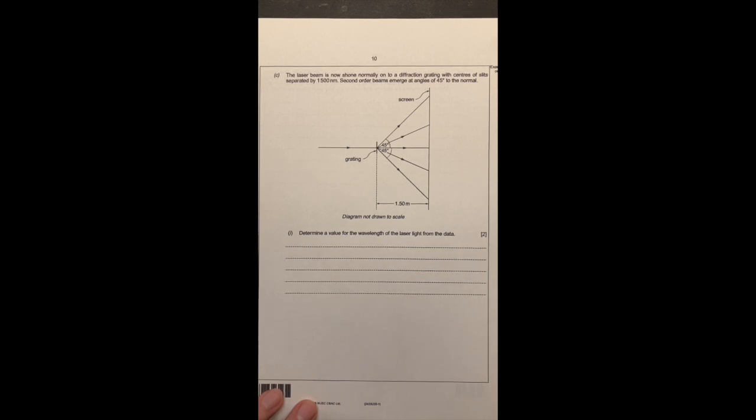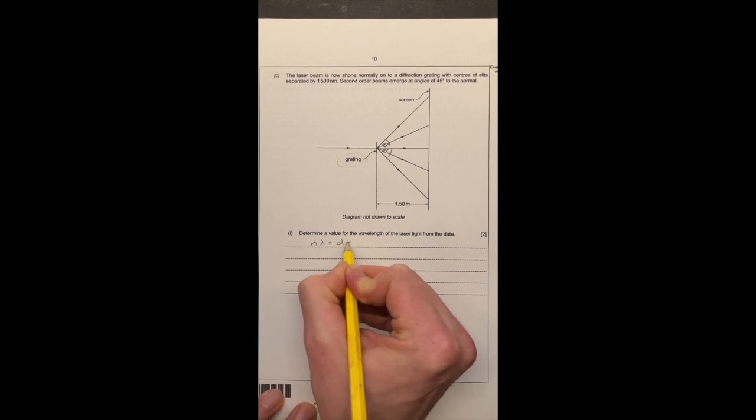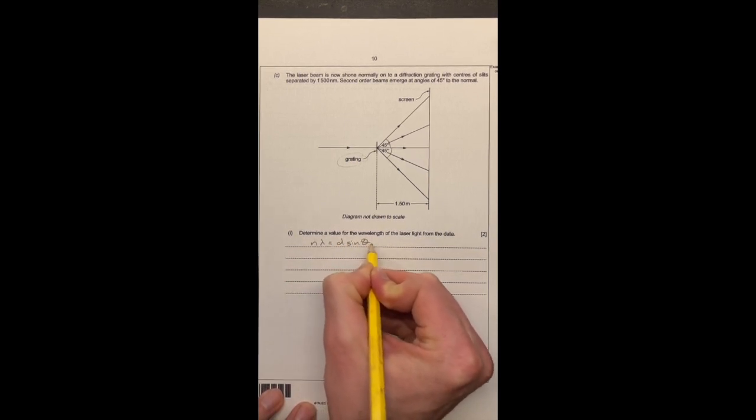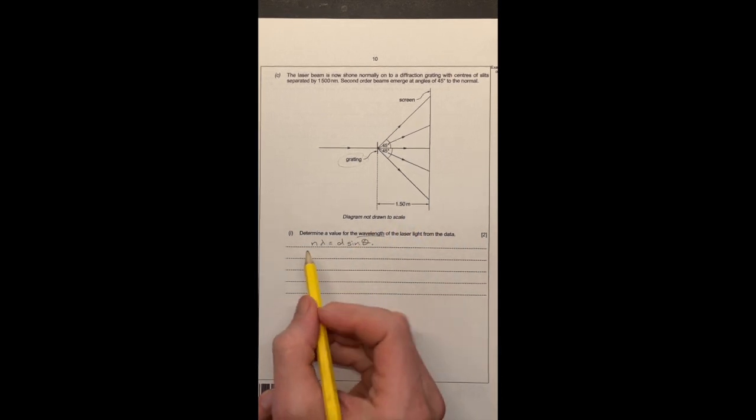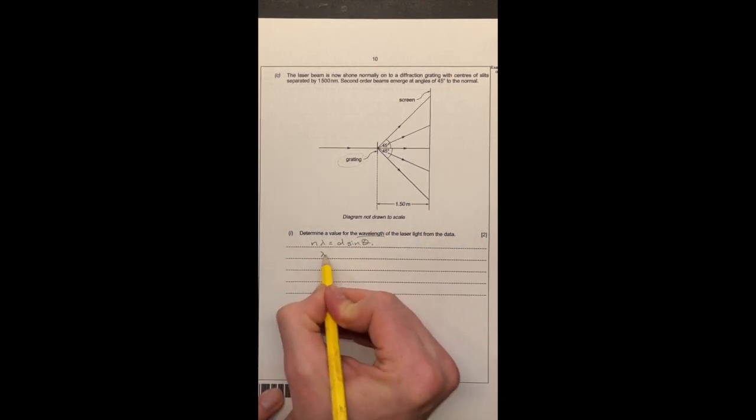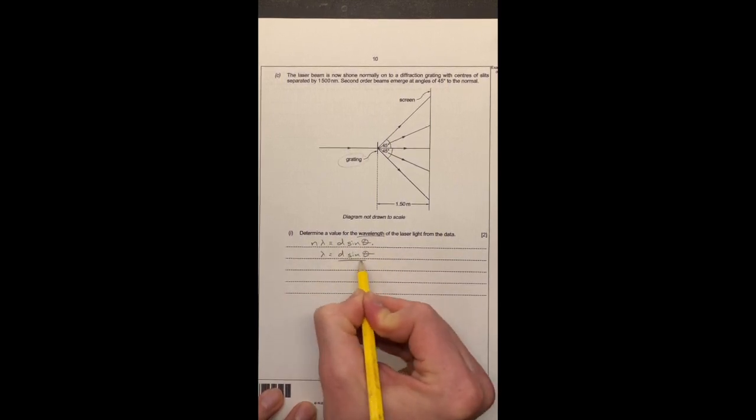So part C of this question is a slight change, so this time we're using a diffraction grating, so we're going to have a slightly different formula, and the formula we're going to need for this one is n lambda equals d sine theta. So we're going to quick rearrange, we're after the wavelength again, so determine the wavelength.